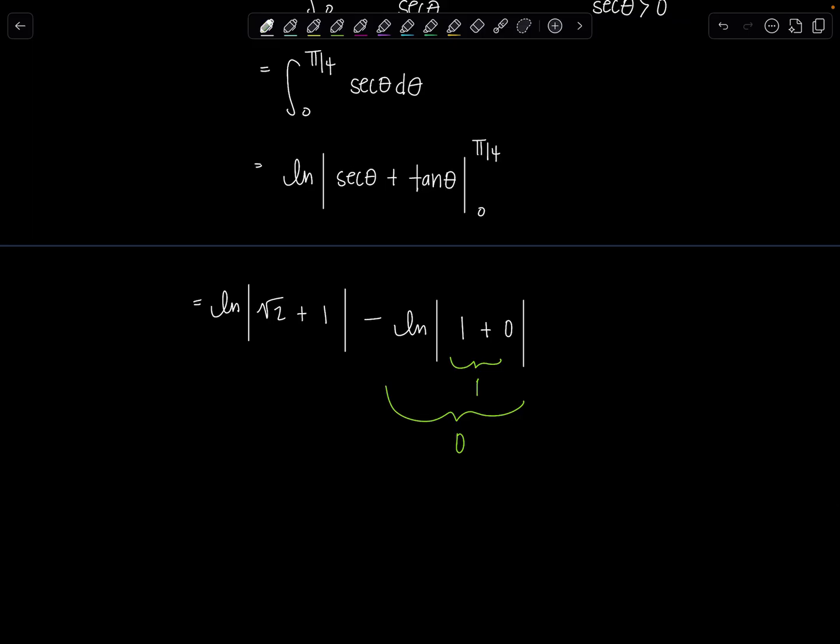And then root two plus one that's not negative. So I can just write my final answer without absolute value bars we have natural log of root two plus one. Boom.